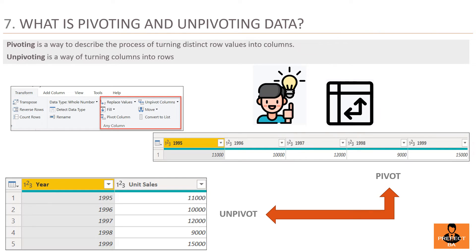Question 7: What is pivoting and unpivoting data? Pivoting is a way to describe the process of turning distinct row values into columns. Unpivoting is a way of turning columns into rows. Imagine the table is on a hinge — pivoting is like rotating it from a vertical to a horizontal layout, and unpivoting is like rotating it from horizontal to vertical, as shown in the slide.